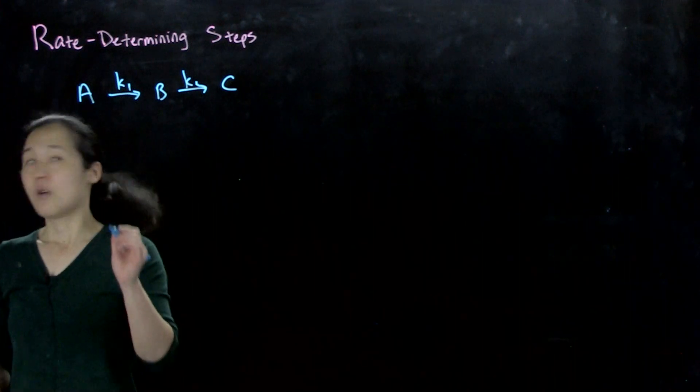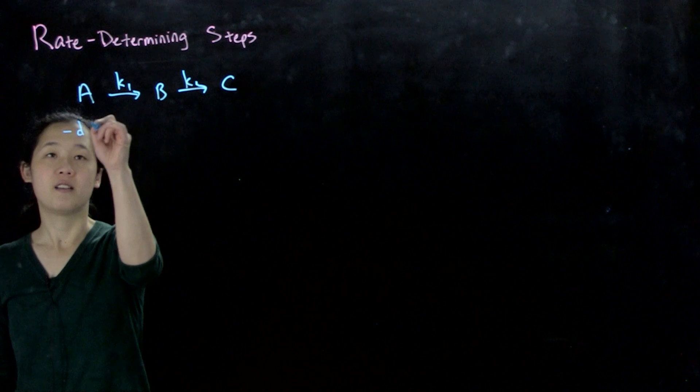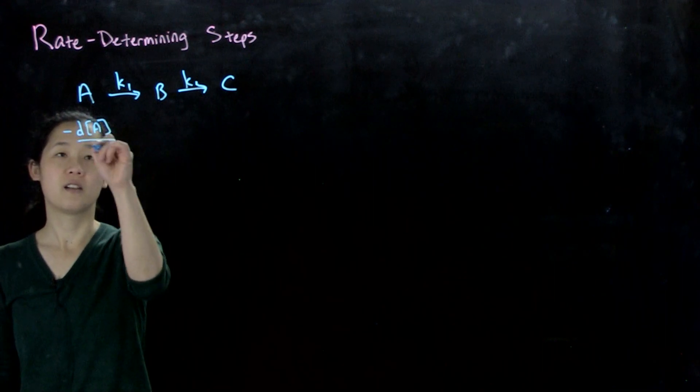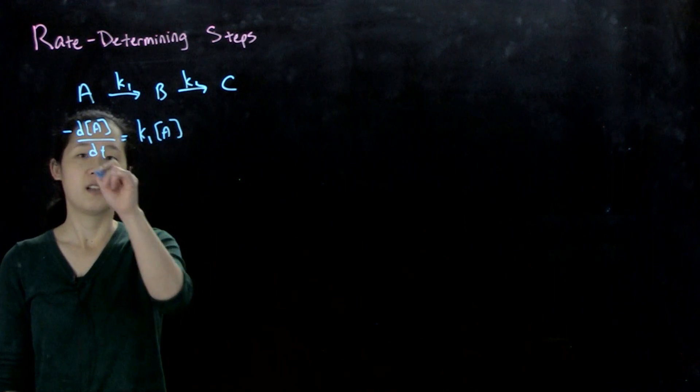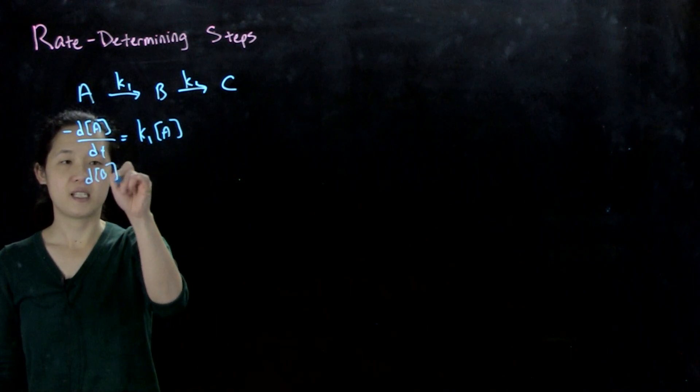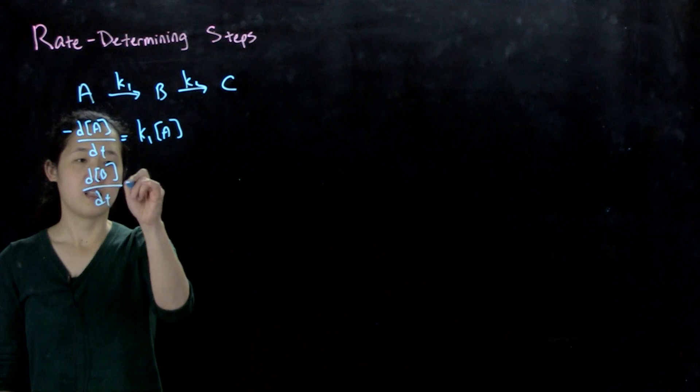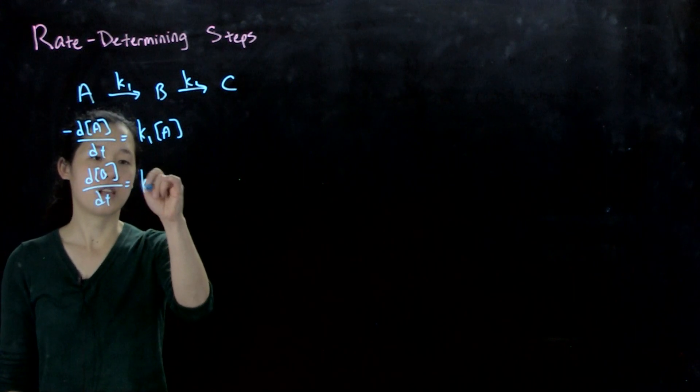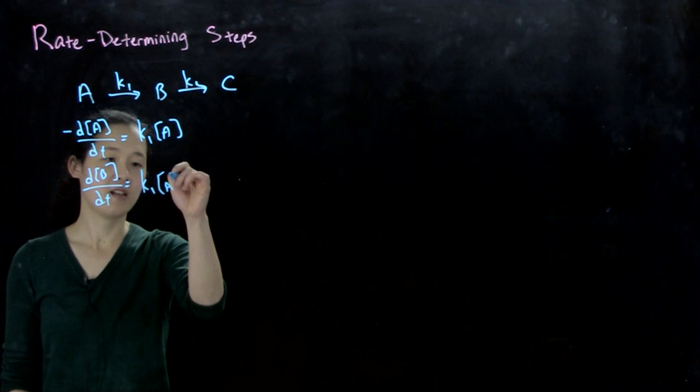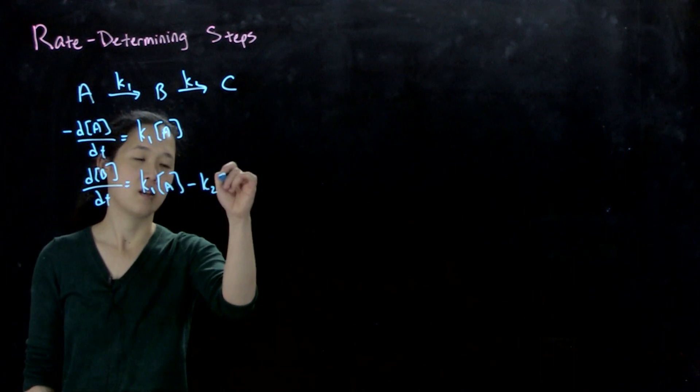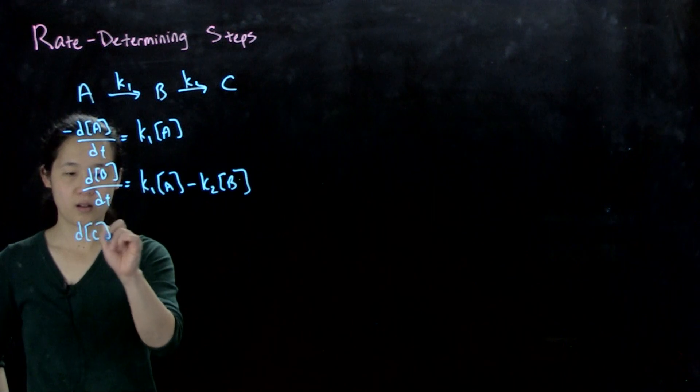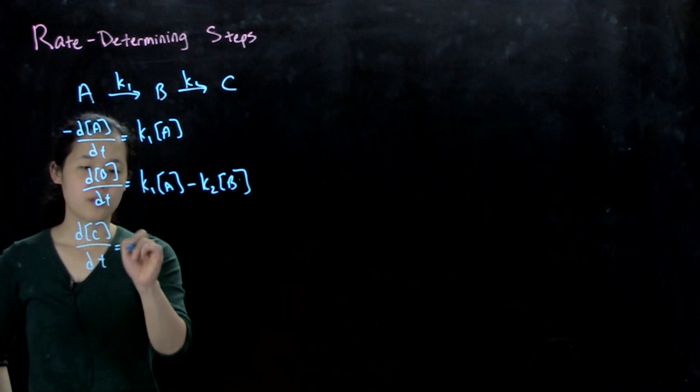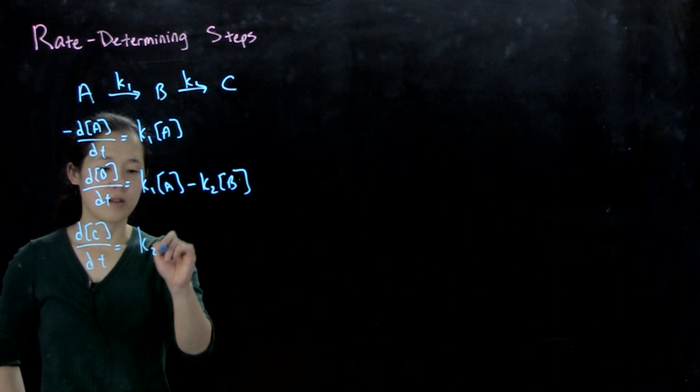So what we say is that negative dA/dt is going to be equal to k1[A]. dB/dt equals k1[A] minus k2[B]. And dC/dt equals k2[B].